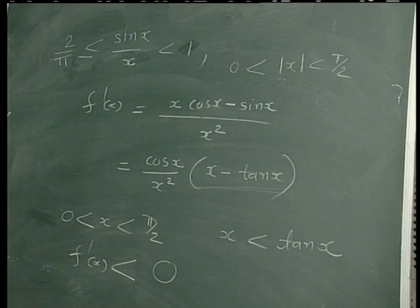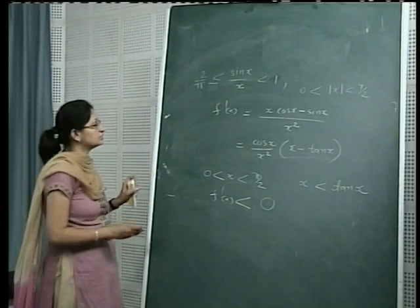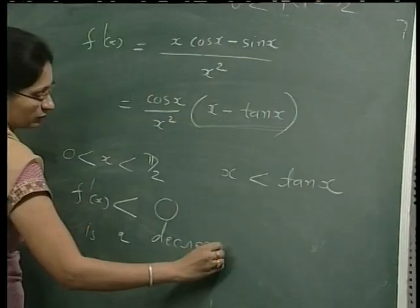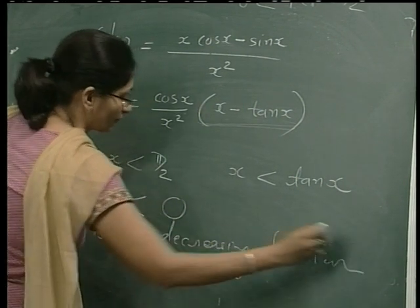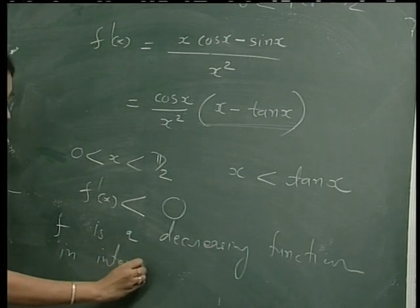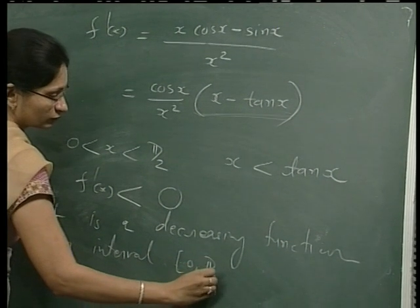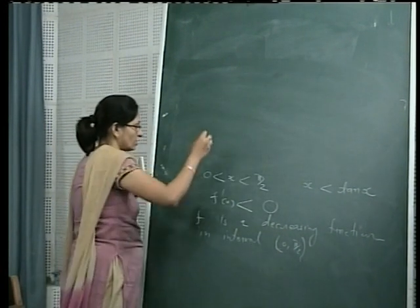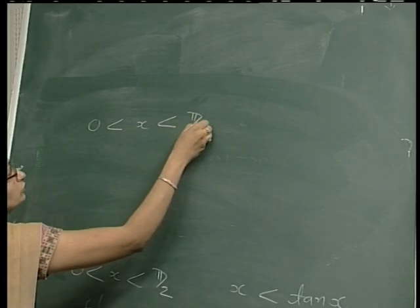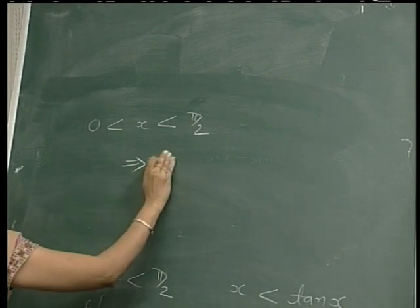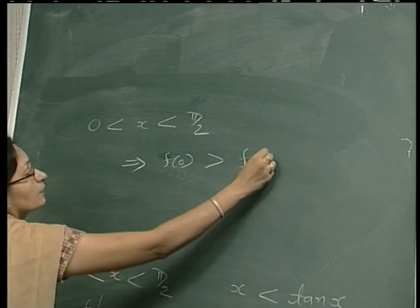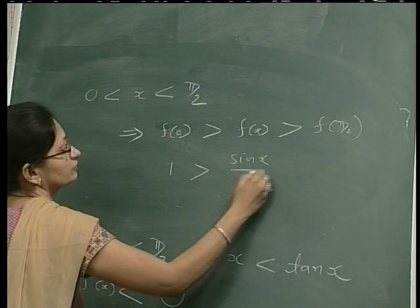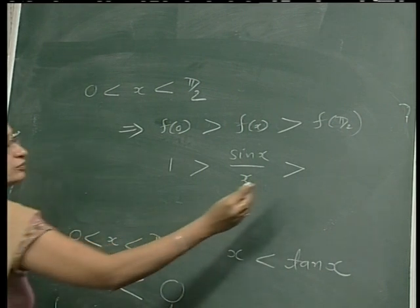Since f'(x) < 0, by the application of Lagrange's Mean Value Theorem, f is a decreasing function on the interval [0, π/2]. So whenever 0 < x < π/2, since f is decreasing, f(0) > f(x) > f(π/2). We defined f(0) = 1, so 1 > f(x) = sin(x)/x > sin(π/2) / (π/2), giving sin(π/2)/(π/2) = 2/π. Therefore 2/π < sin(x)/x < 1 for 0 < x < π/2.